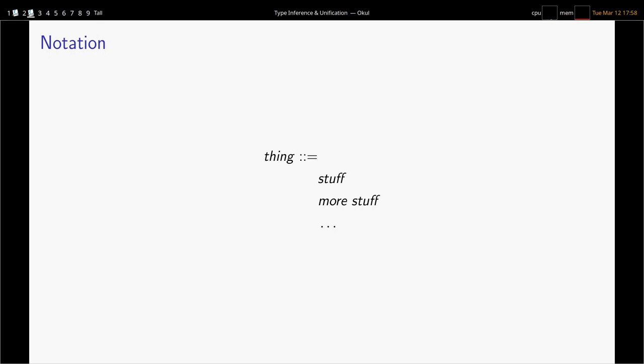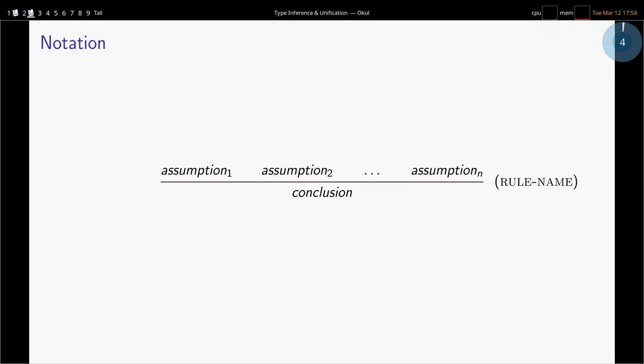I'm going to describe the syntax of languages using this kind of thing. For typing rules, I'm going to use a natural deduction rule. Below the line we have a conclusion and above the line we have many assumptions. This will generally correspond to some kind of function where the assumptions are subcalls — sometimes recursive calls — and it's not quite apparent which things will be inputs and outputs, but I will later clarify how to translate these into code.